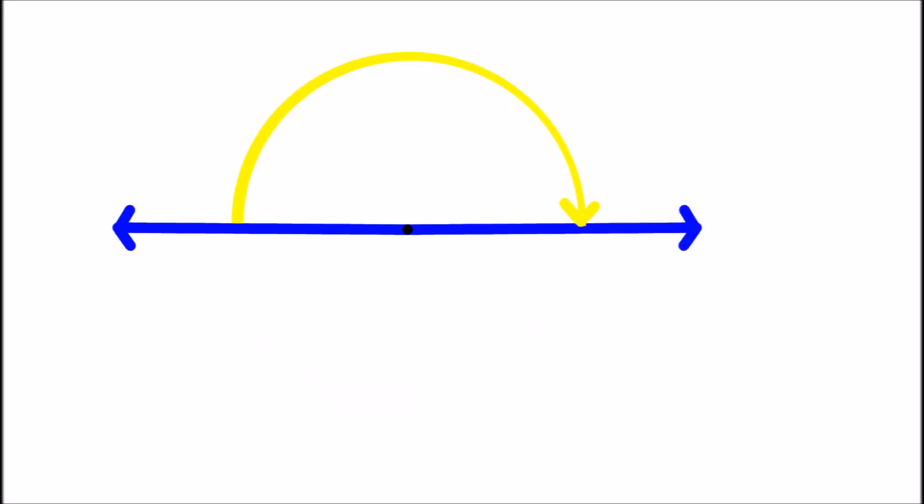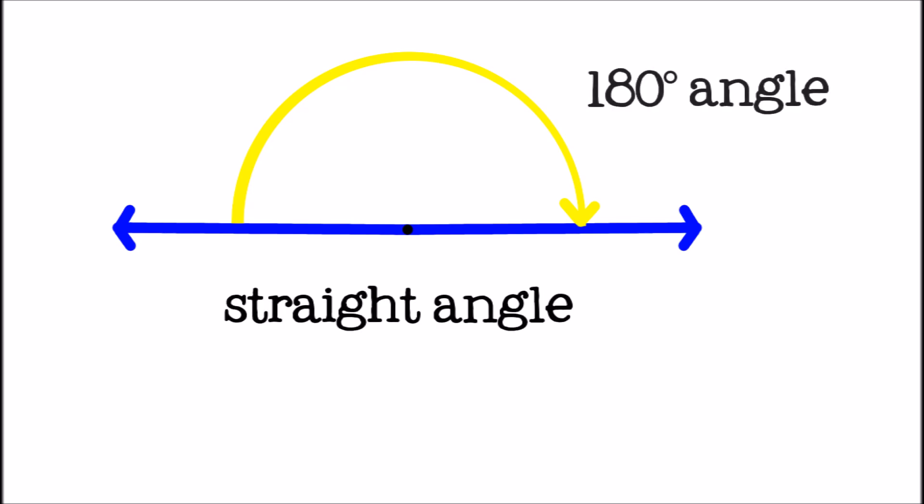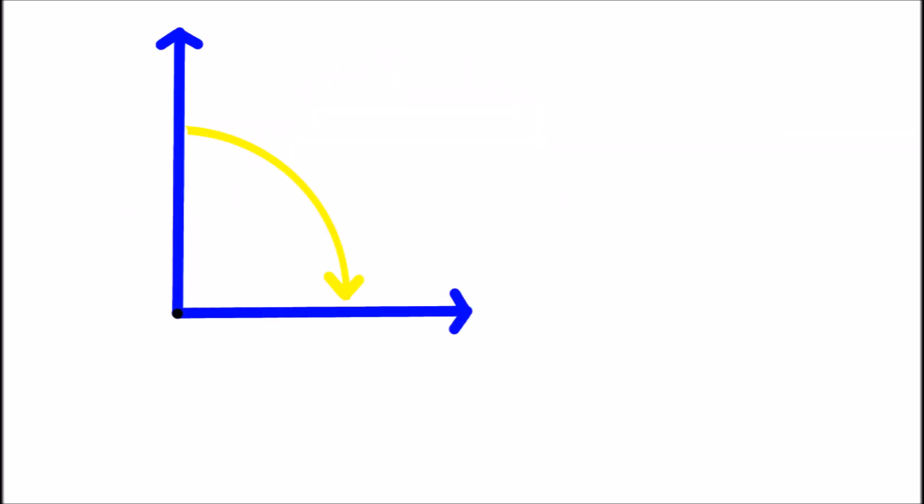One half of a turn, which forms a straight line, is 180 degrees. One quarter of a turn is 90 degrees. This is called a right angle.